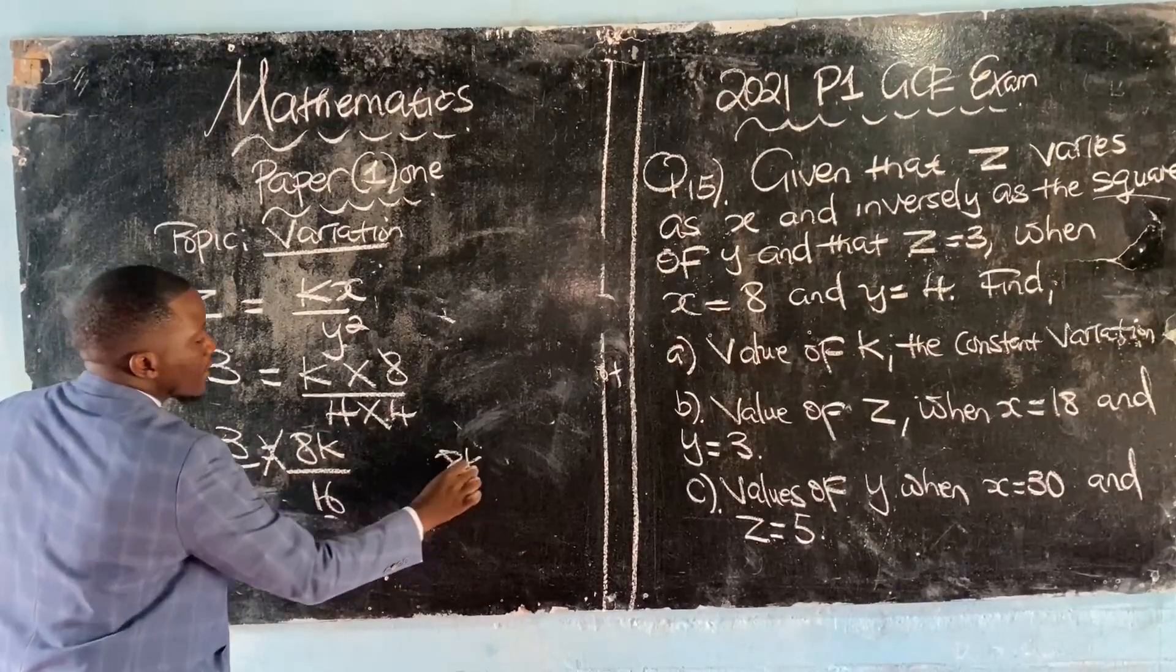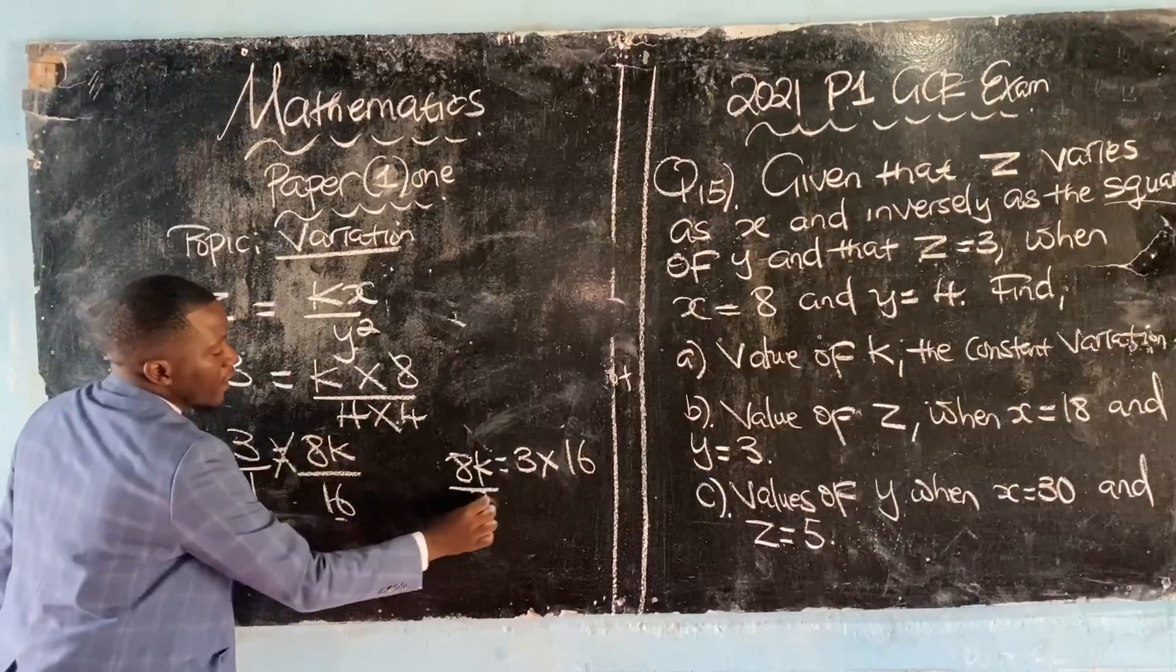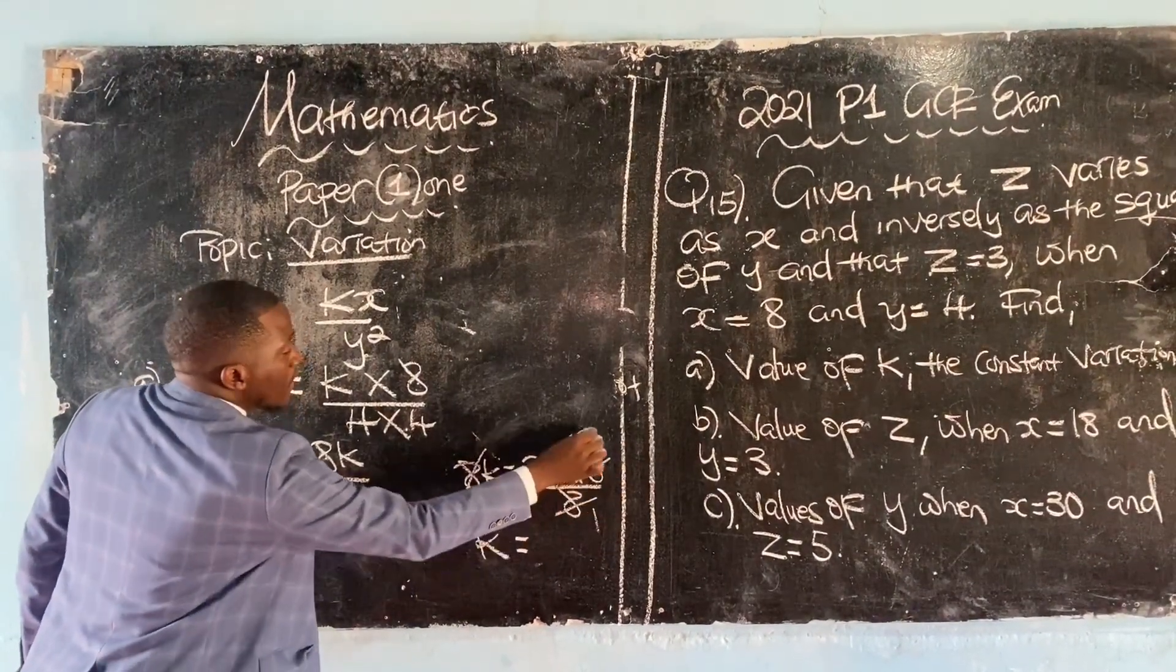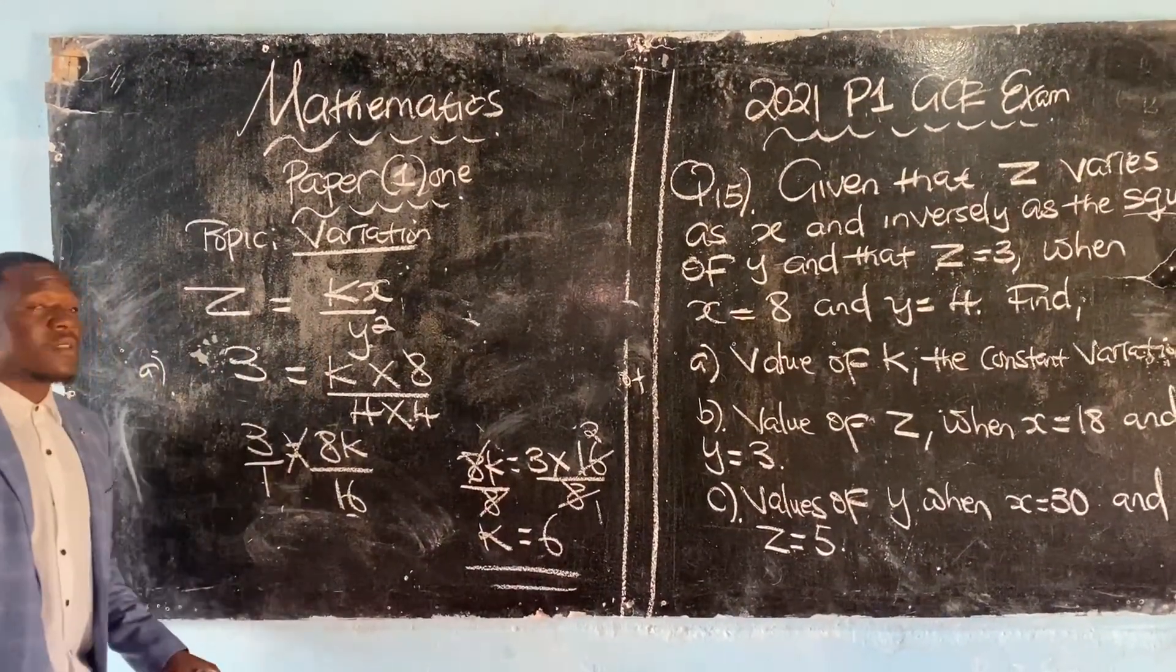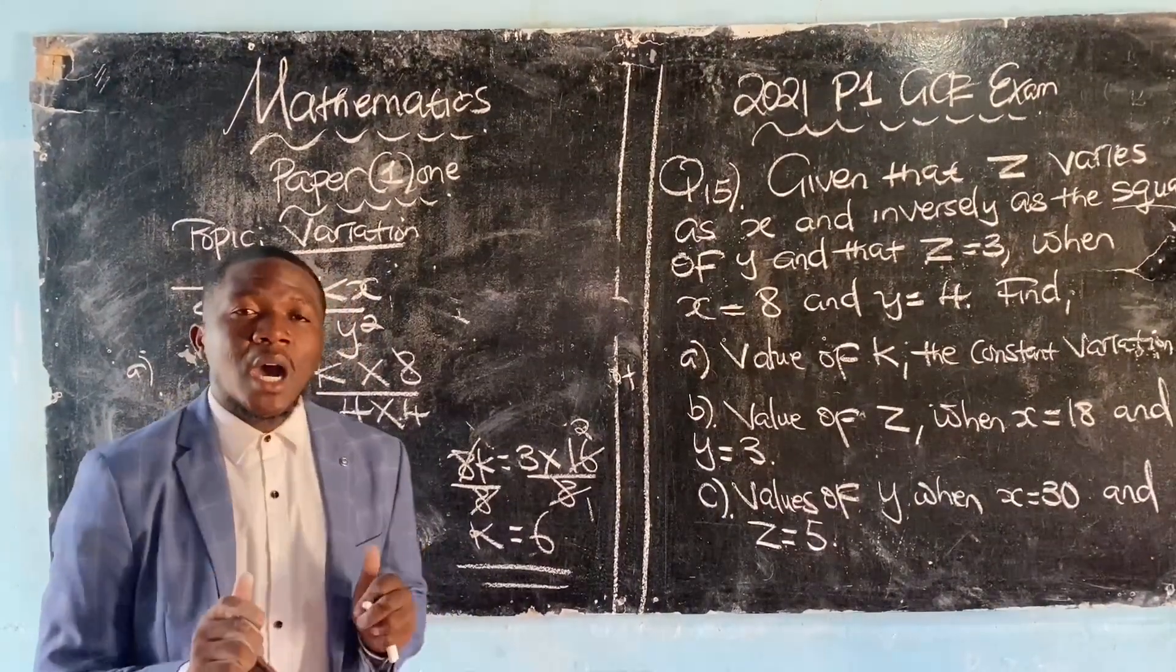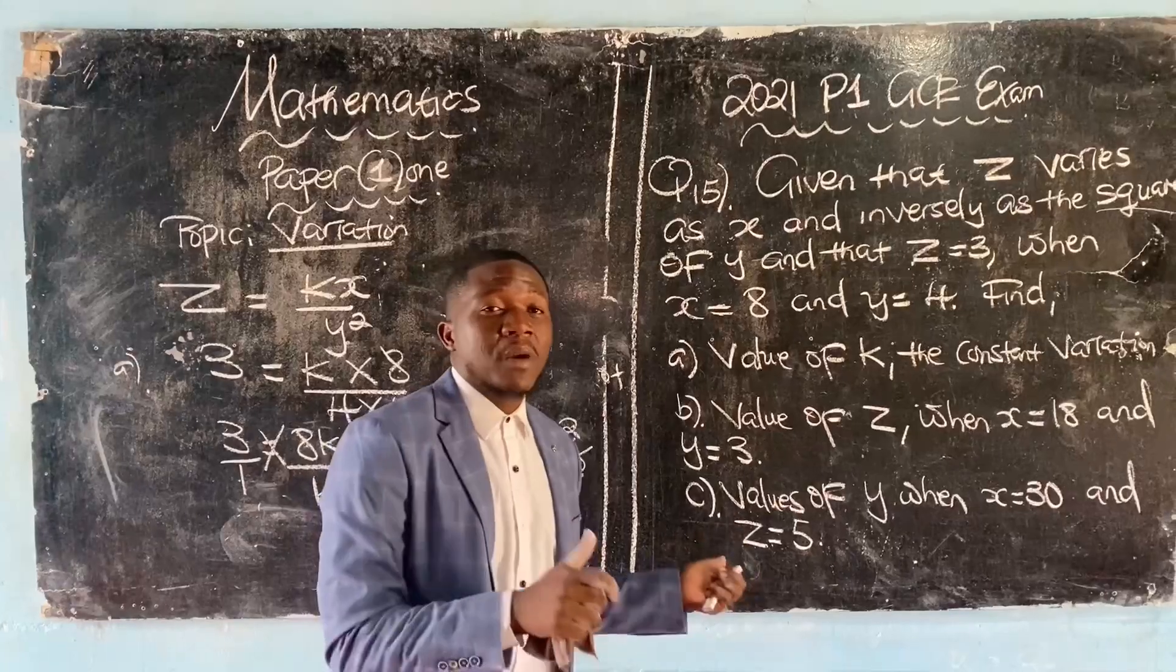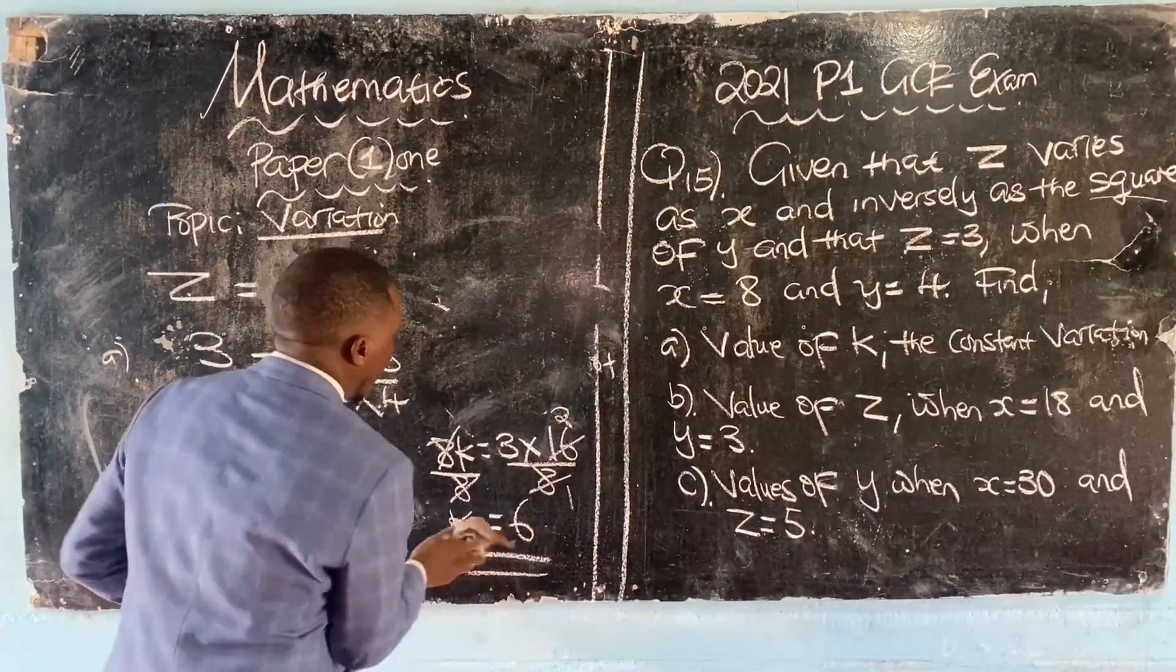8k equals 3 multiplied by 16. Divide by 8 on both sides. 8 into 16 is 2, so 3 times 2 gives us 6. This means the value of k is 6. When you find the value of k wrong, it means the rest of your answers will also be wrong.